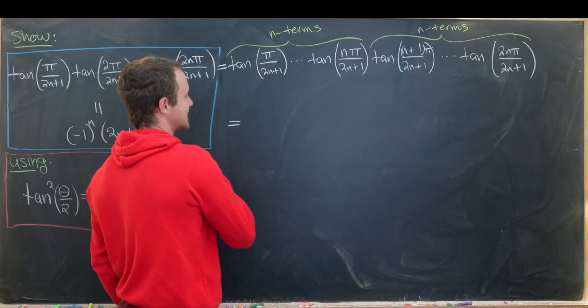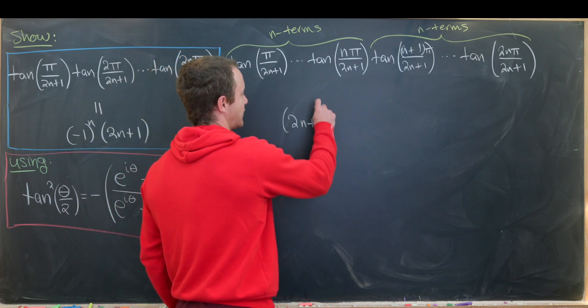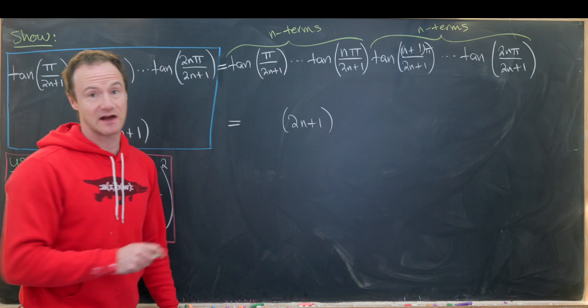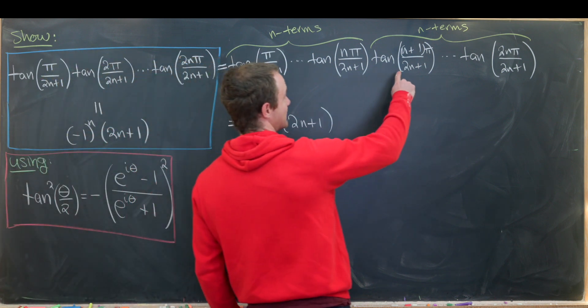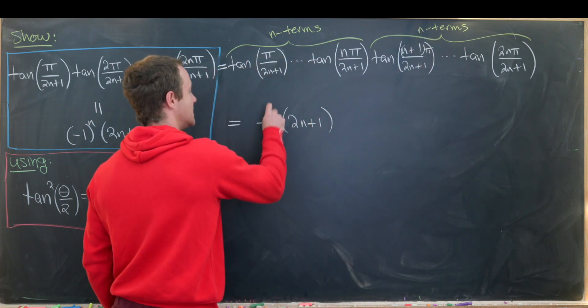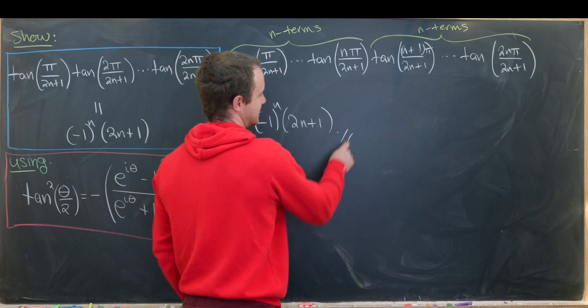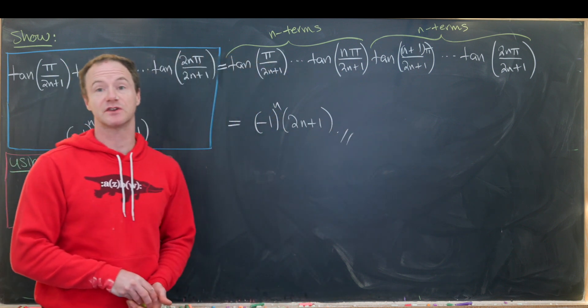So we showed on the last board that this multiplies together to 2n plus 1 with a plus minus out front. And now we can determine when we get a plus and when we get a minus. And that's determined by how many minus signs we have right here. Which is exactly n. So now we have this as minus 1 to the n. And that finishes the derivation of our identity. And that's a good place to stop.